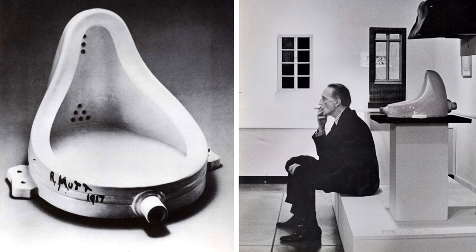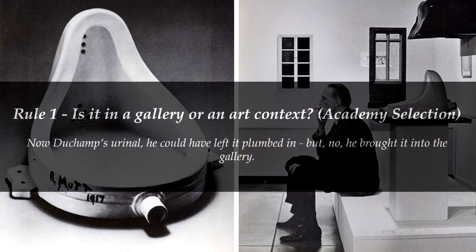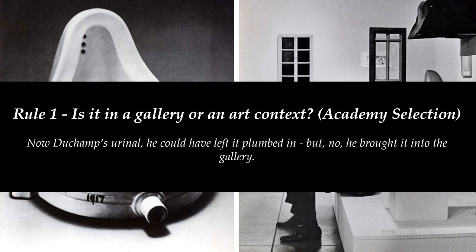Rule number one: is it in a gallery or an art context? Duchamp's urinal — he could have left it plumbed in, but no, he brought it into the gallery. In this test we see the modern relying on the academy to show artistic worth. This is an appeal to authority of sorts, where proof relies on a base of tradition and learning — a view which is actually quite similar to what we've previously seen.